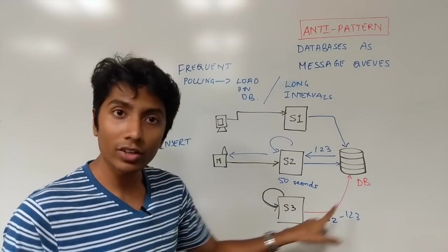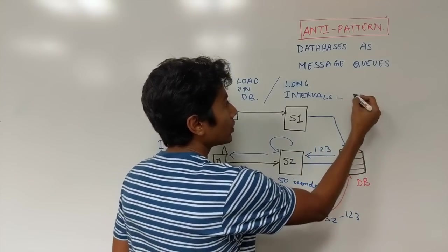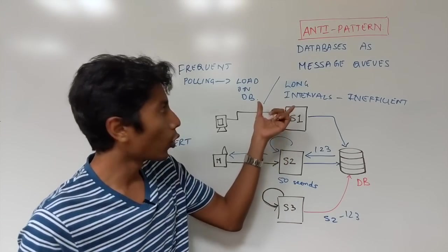So S3 wanted to send a message, it took 50 seconds, the user experience is bad. So long intervals are inefficient. Here's the problem with just polling intervals.